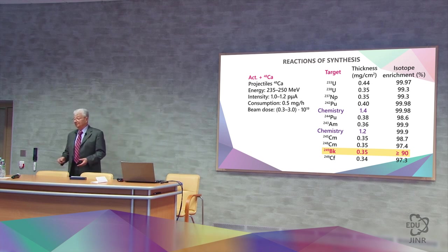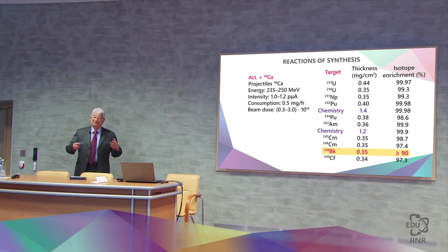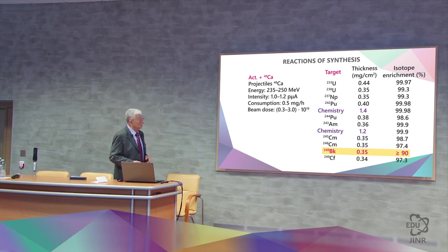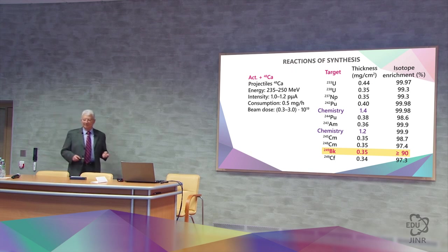Therefore, it was necessary to accumulate it, divide it, make a target out of it and create an experiment with this target within 300 days. This was very difficult, but nevertheless such an experiment was carried out. And as you know, the 117th element was added to the periodic table.